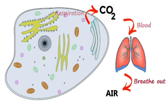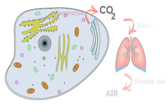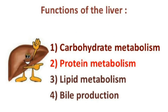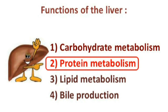Urea, however, is produced by only one organ, and that is the liver. Two key things to know about urea before we take a look at its formation: firstly, it is formed from excess amino acids, and secondly, it is transported from the liver to be excreted.